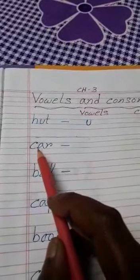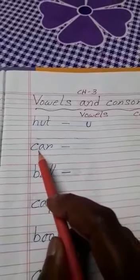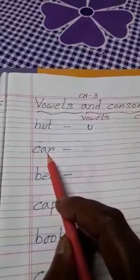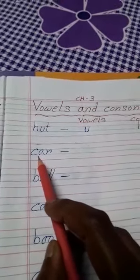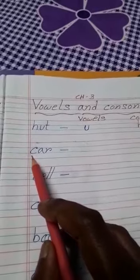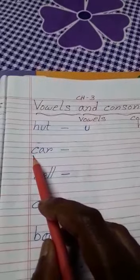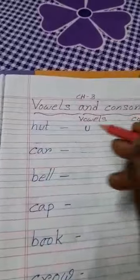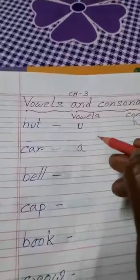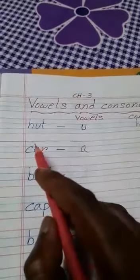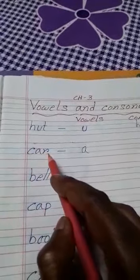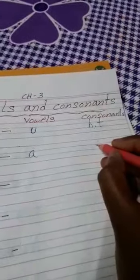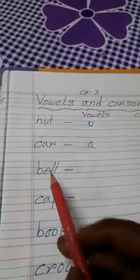Now what is this? C, A, R — car. Which one is vowel here? Is C vowel? No. A is a vowel? Yes. So here A is a vowel, and C and R are consonants.